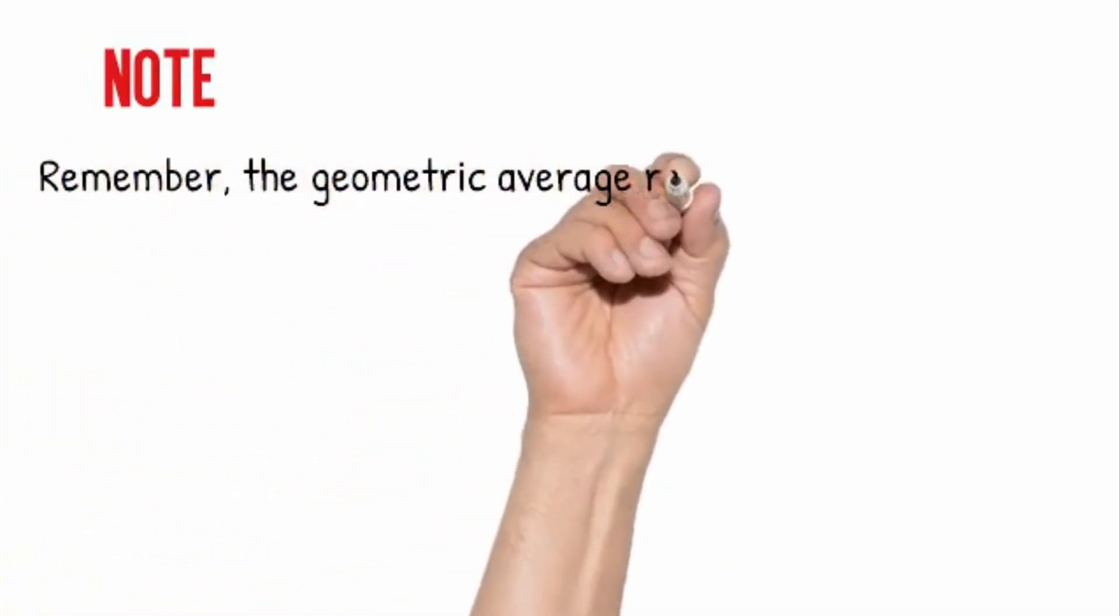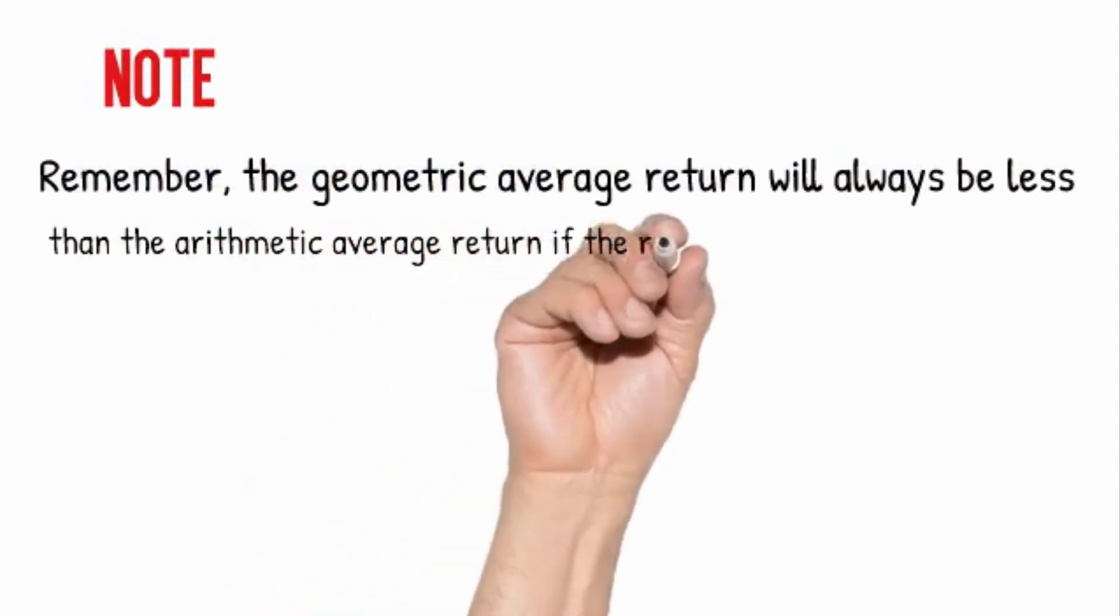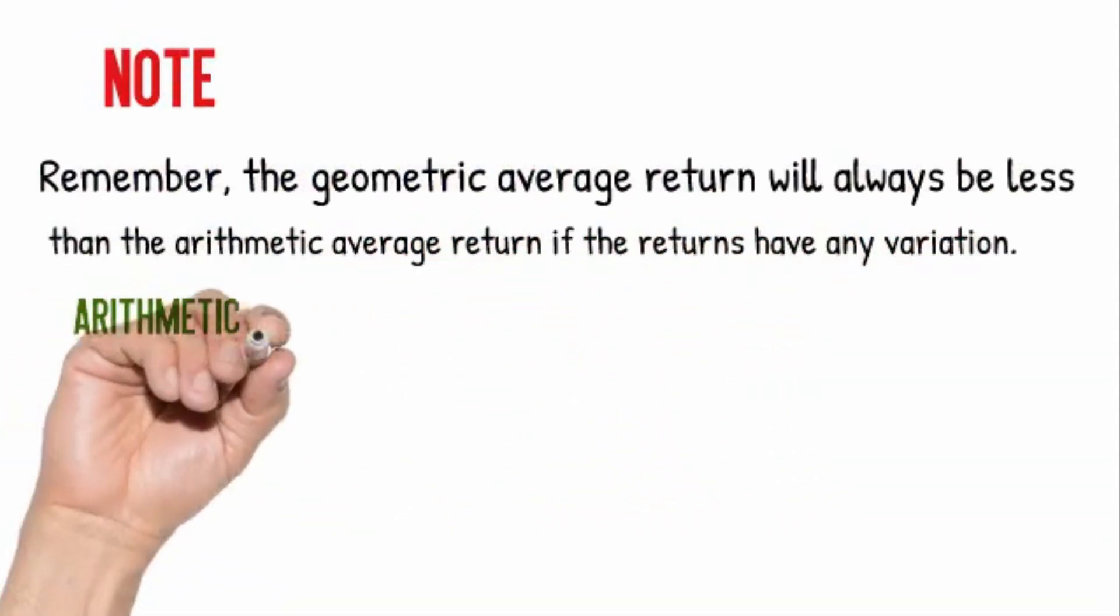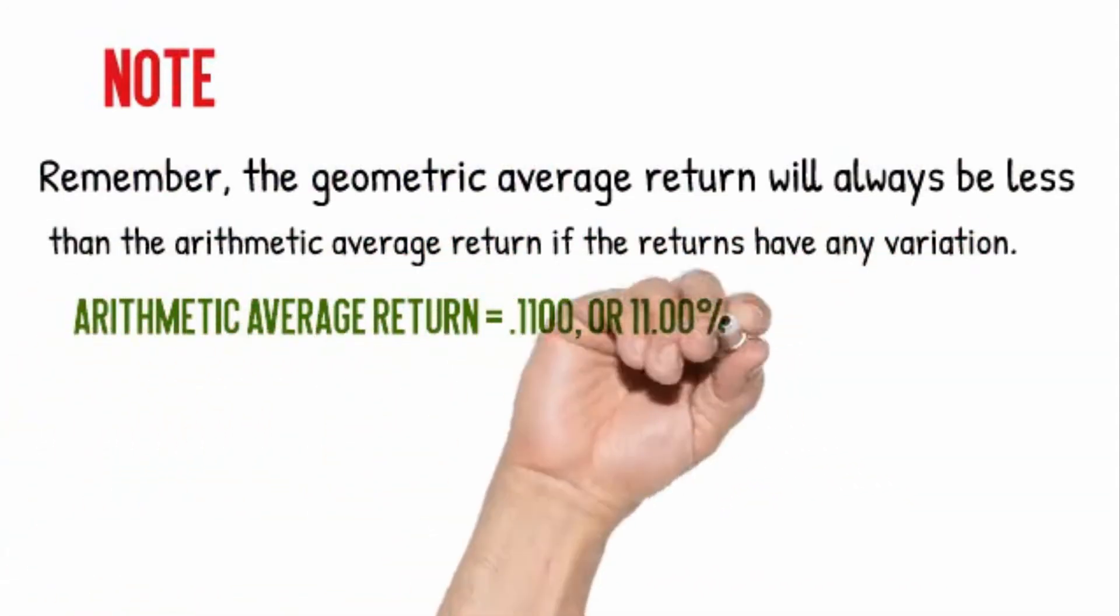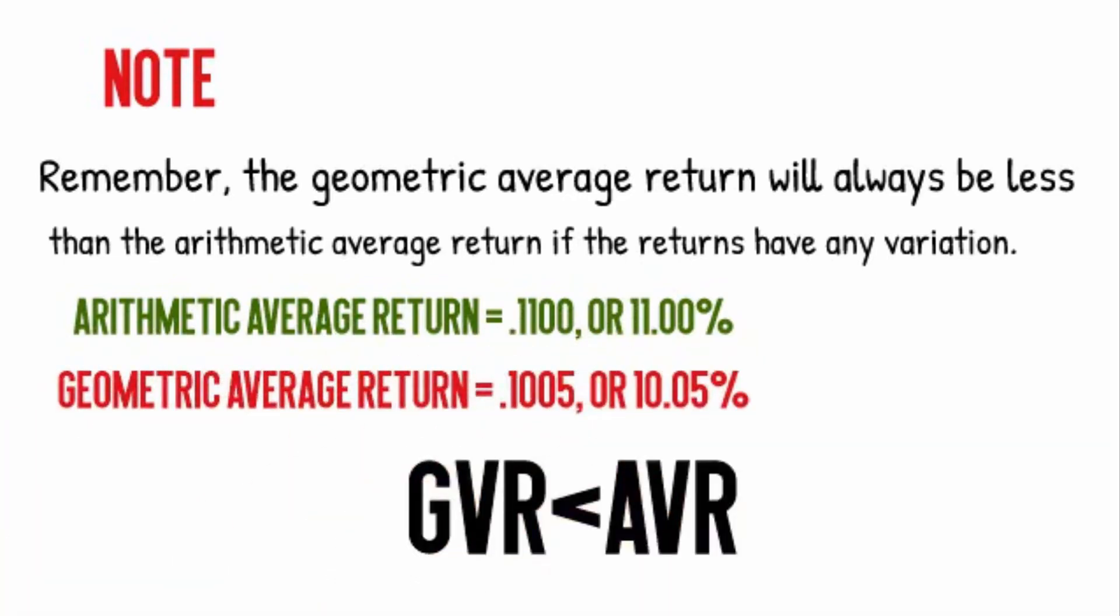You must remember, the geometric average return will always be less than the arithmetic average return if the returns have any variation. In our previous calculation, arithmetic returns for the stock were 11% and geometric average return for the stock was 10.05%. It is clear that geometric average return is always less than arithmetic returns.